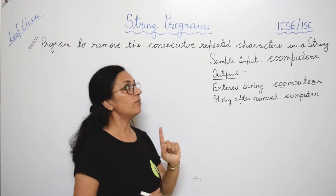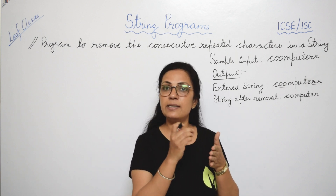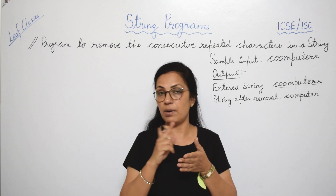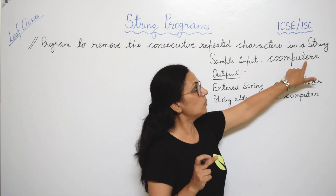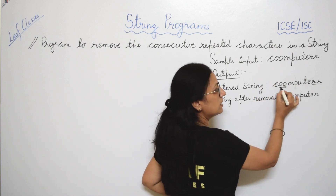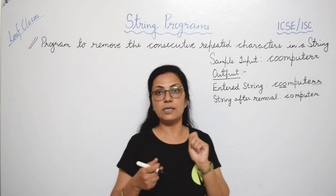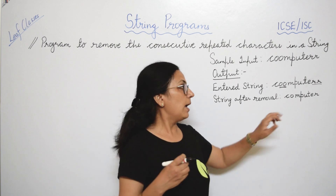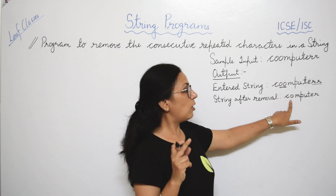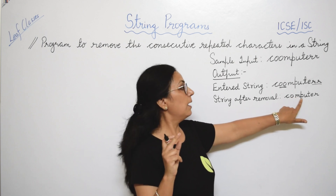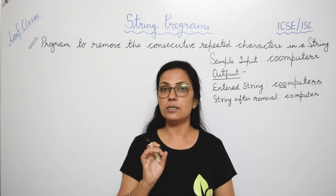The question is: write a program to remove the consecutive repeated characters in a string. Consecutive repeated characters means characters that appear one after another. Suppose the sample input is 'coomputerr' — here double 'o' and double 'r' are consecutive. The output should be 'computer' — only one 'o' and one 'r' are written.